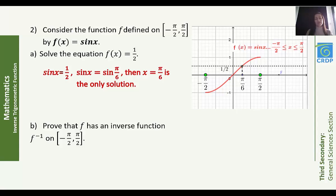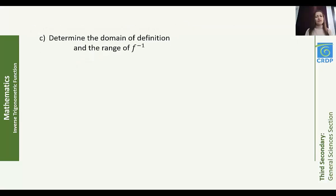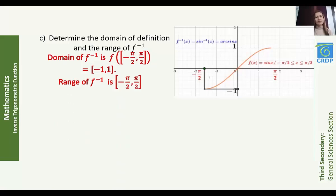The existence of the inverse function admits two conditions. f'(x) = cos(x), and cos(x) ≥ 0 on [-π/2, π/2]. Moreover, f is strictly increasing and continuous. As we can see in the figure, f is strictly increasing and continuous over [-π/2, π/2], so f⁻¹ exists. Part C: the domain of f⁻¹ is f([-π/2, π/2]) = [-1, 1], and the range of f⁻¹ is the closed interval [-π/2, π/2].